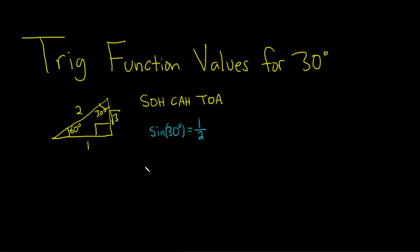Now we can find the reciprocal function. The reciprocal of sine is cosecant. So cosecant of 30 degrees, if you flip 1/2, you get 2.